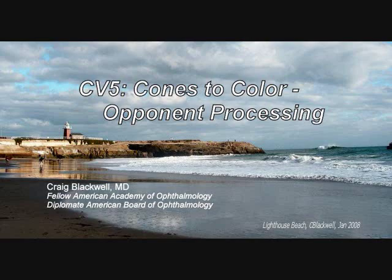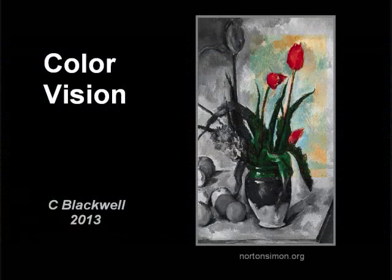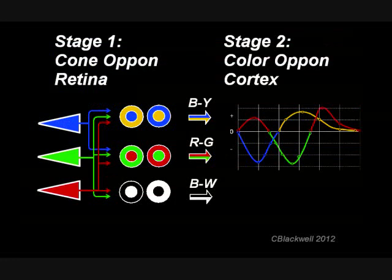In this video, we will cover how color output from the cones gets processed into the colors we recognize. This is part 5 in our series about color vision. Stare at the center of this oddly colored flag for 5 seconds or so, then look at this white space. The afterimage is a properly colored flag. Understanding how these colors leave an afterimage like this was a clue to early researchers about how color vision works.